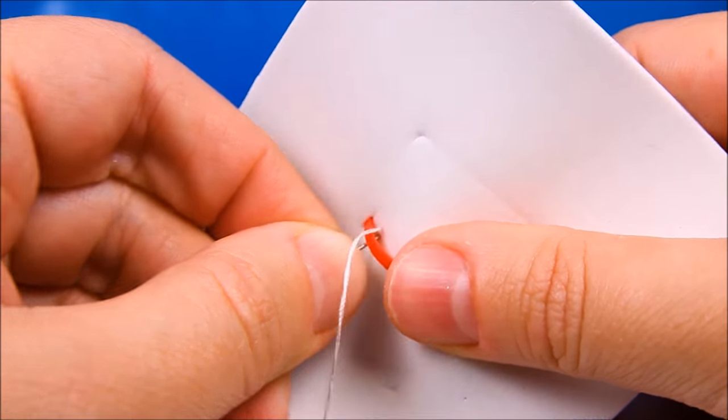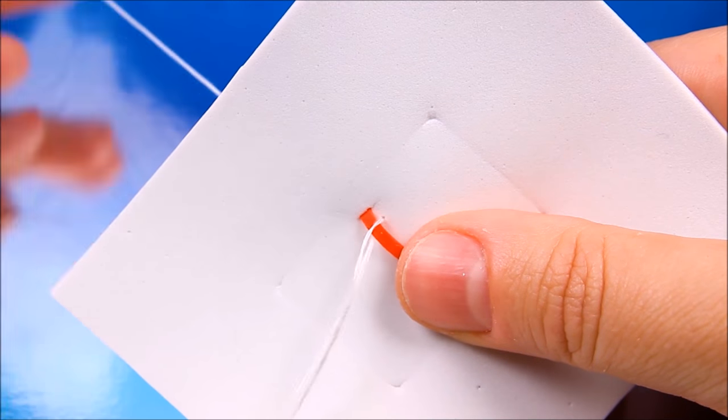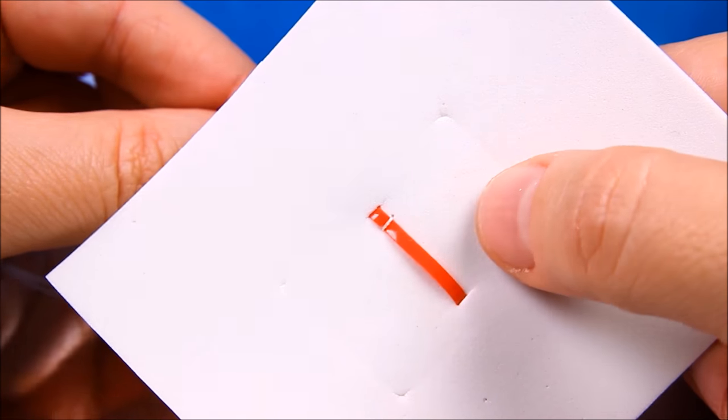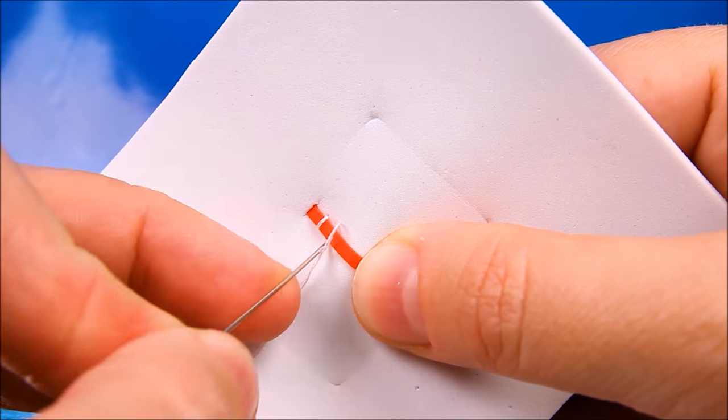Using a needle and thread I fixed the position of the rainbow loom and created tiny partitions, one partition per pencil.